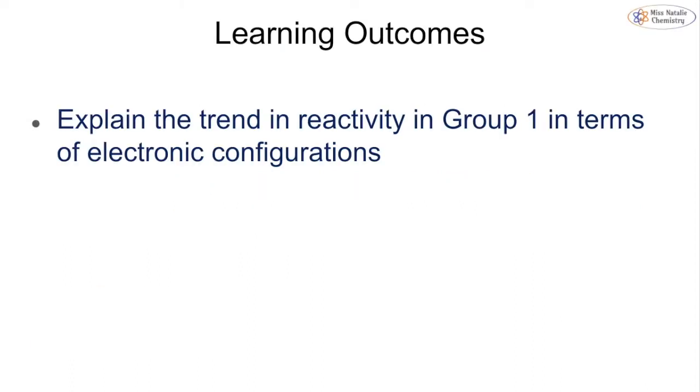This is a very small topic. There is only one learning outcome, and it is a new learning outcome, so there are no past paper questions for this topic. So we're going to be looking at how we can explain the trend in reactivity in Group 1 in terms of the electronic configurations.